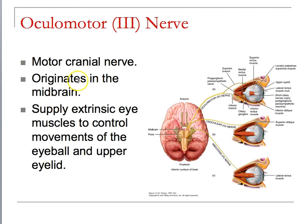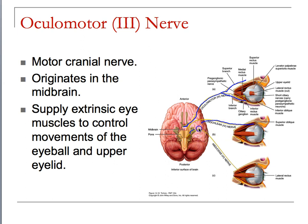The oculomotor nerve is a motor cranial nerve. It originates inside the midbrain and supplies the extrinsic muscle controls of the upper eyeball and upper eyelid — this is why you blink. Notice the oculomotor nerve traveling up with a superior branch and an inferior branch, regulating a subset of the eye muscles. The trochlear nerve regulates the superior oblique muscle and the abducens nerve regulates the lateral rectus muscle.